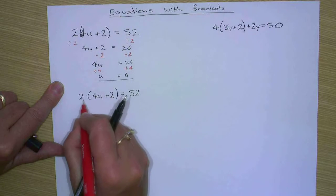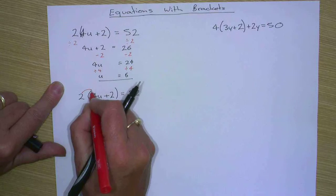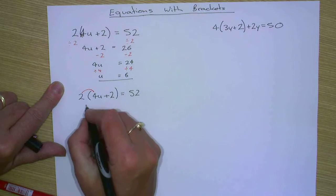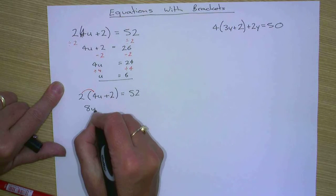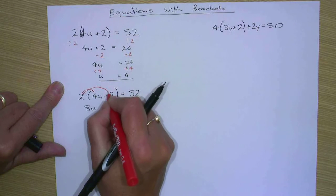This means two times all the things that are in brackets. So it's two times four u. So two times four is eight, and then we have the u.